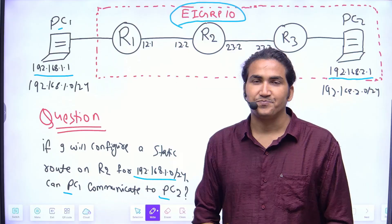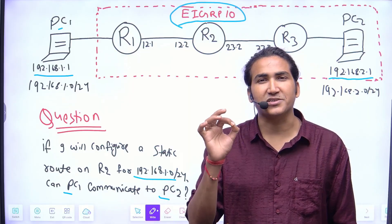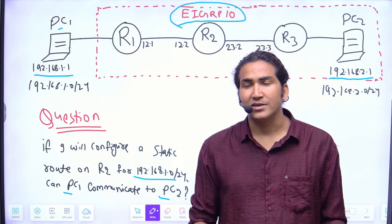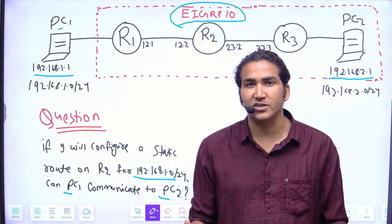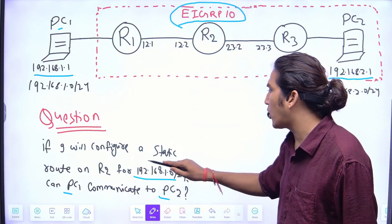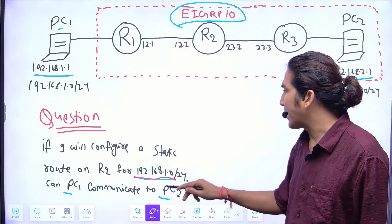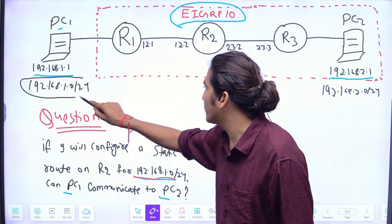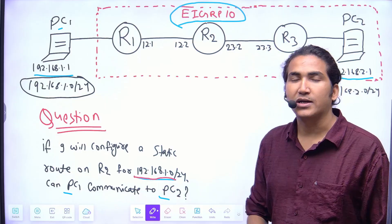Here is a question. This is a commonly asked scenario based network engineer interview question — interviewers ask these types of questions to test your knowledge. The question is very simple: if I configure a static route on R2 for the LAN subnet 192.168.1.0/24, can PC1 and PC2 still communicate with each other?